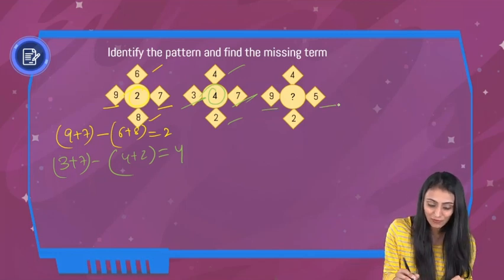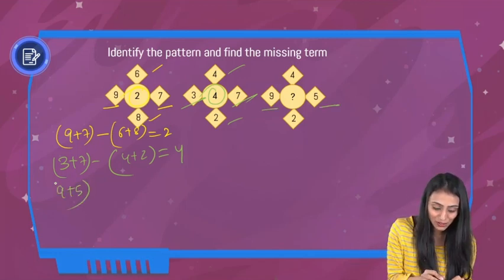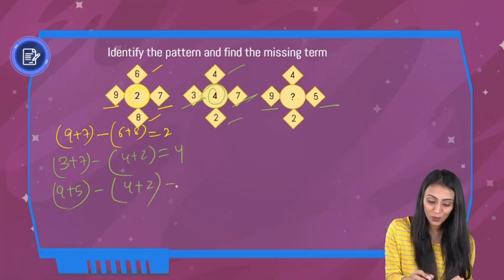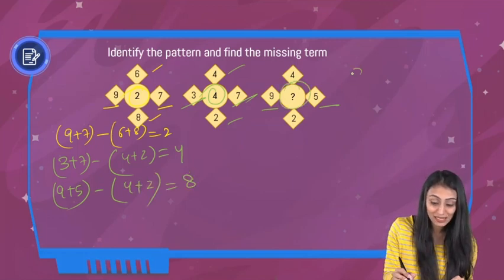Now take a look here. If I add 9 and 5 and subtract the sum of 4 and 2, what do I get? I'm going to get 8. That means our missing term is 8. Interesting one, right?